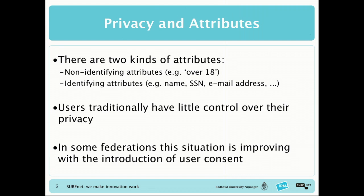There is an inherent problem here. There are two kinds of attributes: non-identifying ones like the fact that I'm over 18, and identifying ones like your name or social security number. In traditional identity federations, users have very little control over their privacy. Decisions about which attributes are released are agreements between identity providers and service providers. Some federations are improving this by introducing user consent — which SurfNet is doing — but institutions and service providers are reluctant to relinquish control.